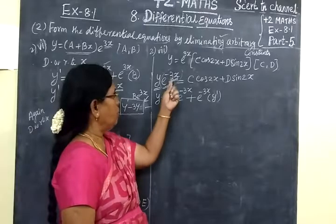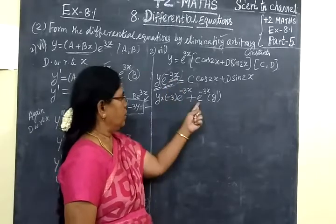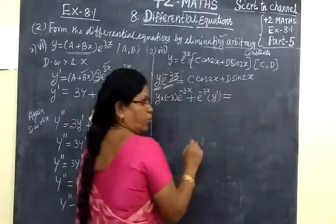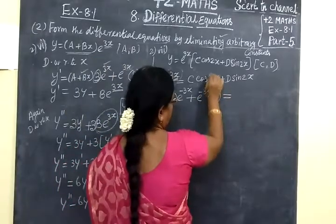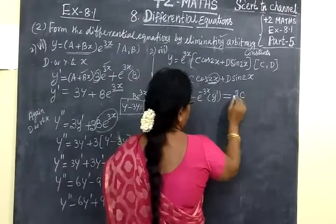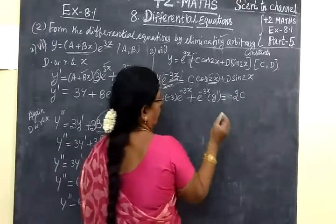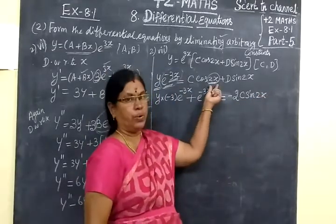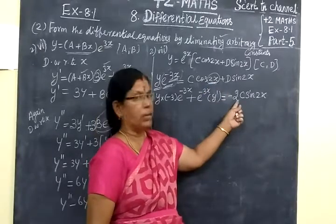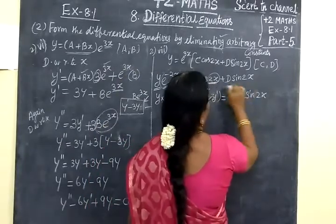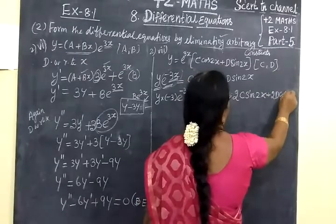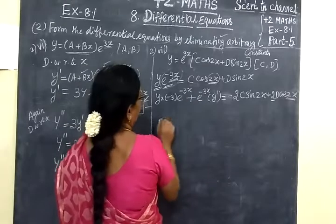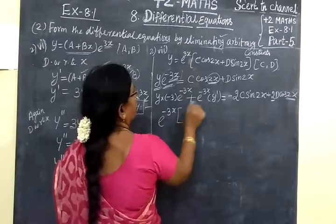Applying the UV method: differentiating e^(-3x) gives minus 3·e^(-3x). Then differentiate the second function. Cos differentiates to minus sin, so we get minus sin2x, and the inner function 2x differentiates to give 2, so we write 2 in front. Then plus 2D — sin's differentiation gives cos2x, inner function gives 2 — so plus 2D·cos2x. So y dash minus 3y equals e^(-3x) times the bracket: minus 2C·sin2x plus 2D·cos2x.